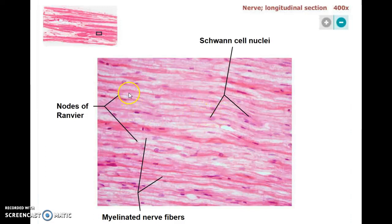In some places you can see where the whitish myelin material pinches in, forming what's called a node of Ranvier. That one doesn't look as clear to me in terms of the Schwann cells.